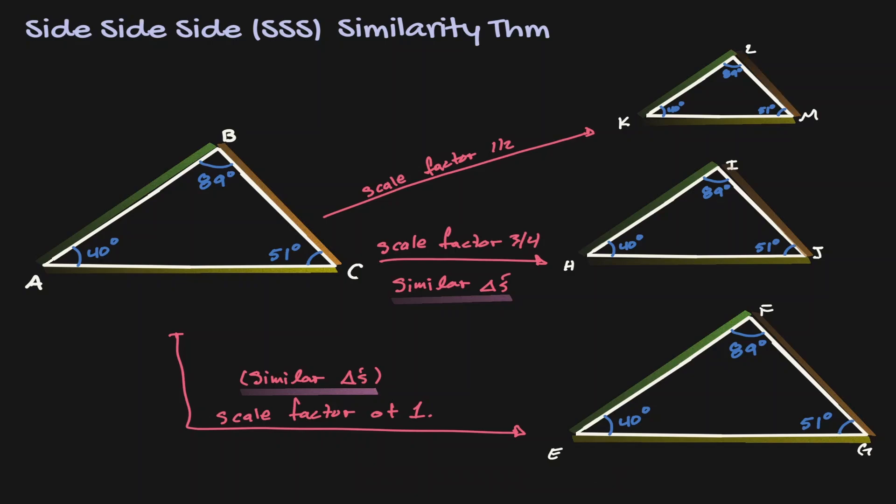Notice that the interior angles are congruent and the sides are proportional to each other, so we can claim that these two triangles are similar to each other.